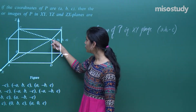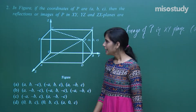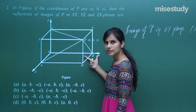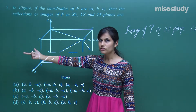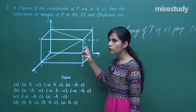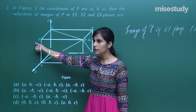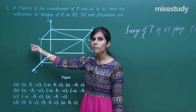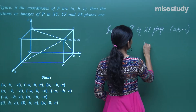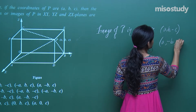Similarly, for the reflection along the x-z plane, the same distance covered along the y-axis is covered on the other side — only b changes to −b, while a and c remain the same. So the reflection in the x-z plane is (a, −b, c).